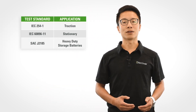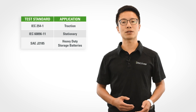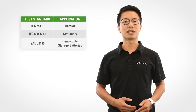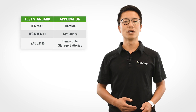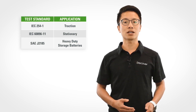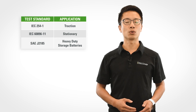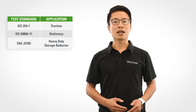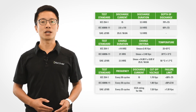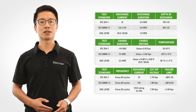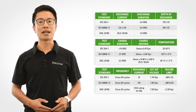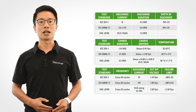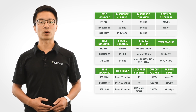Here you can see there is the IEC 254-1 test standard, which is designed for traction and deep cycle applications. The IEC 60896-11 is designed for stationary and telecom applications, and the J2185 is designed for heavy storage batteries used in automotive vehicles. In each of these tests you can see that the charging and discharging parameters are different — the durations and the currents being used are different. You can also see that the end of life characteristics as a percentage of original capacity is also different, including the discharging requirements.